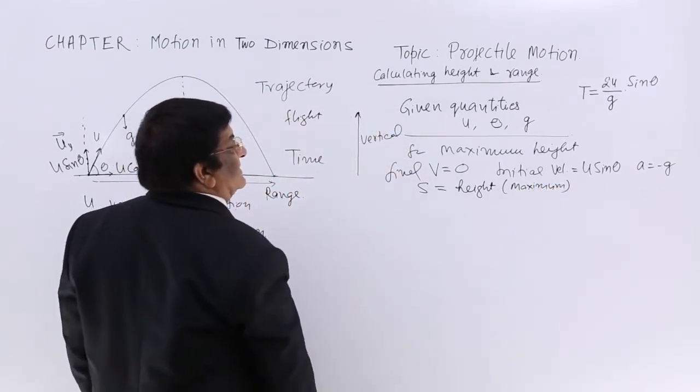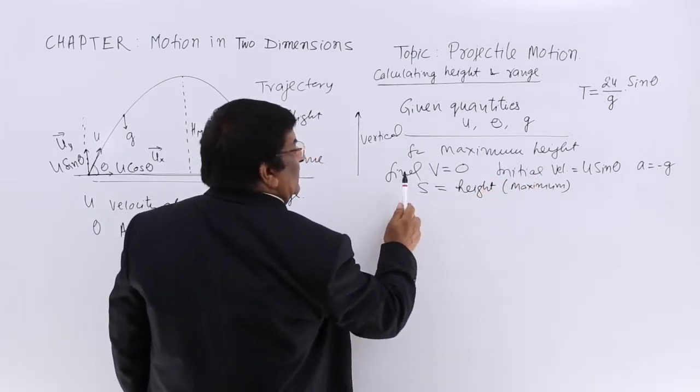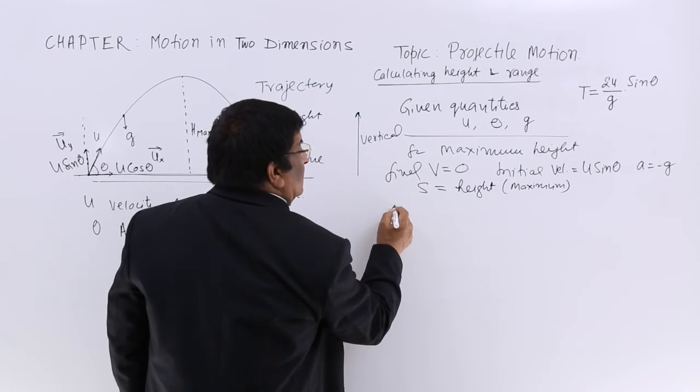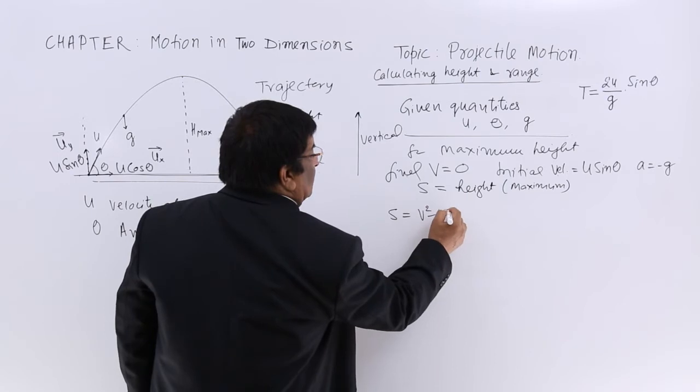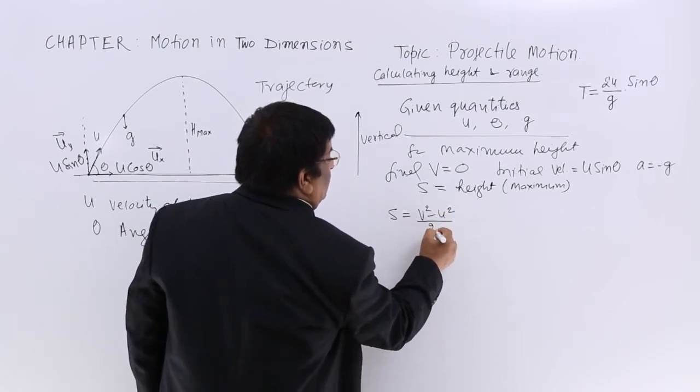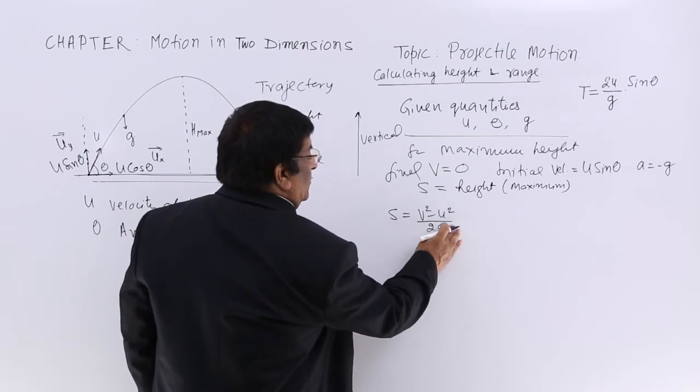To find S, we have the equation S = (V² - u²) / (2A). This is the equation.